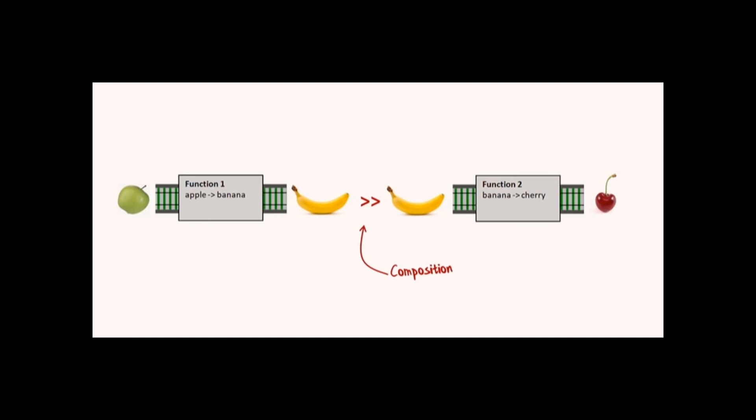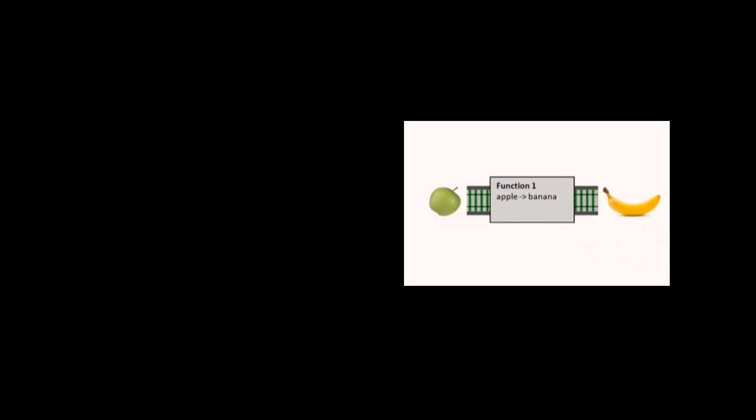And this composition that we're looking at here is an example of a functor because if you recall from chapter seven, when we had the reader example, the map or fmap was basically just the composition operator. So in F sharp, that's the less greater than greater than, but in Haskell, it's just the period. And basically, that functor is an example of a covariant functor.